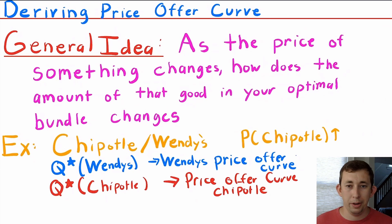As a more concrete example, I'm talking about going out for dinner. The two options are Chipotle and Wendy's. We're going to change the price of one of those restaurants, namely Chipotle, and try to understand how the amount of Chipotle that I buy changes.